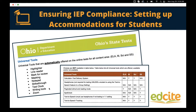Some universal tools are dependent on the subject of the assessment. For example, if you are in Ohio, they actually make text-to-speech a universal tool for math, science, and social studies, and it includes that text-to-speech tracking which highlights the words as they are read. Whereas if it's an ELA assessment, that is not turned on as a universal tool — it becomes a designated tool where the student needs to explicitly have that turned on based on a particular educational need.